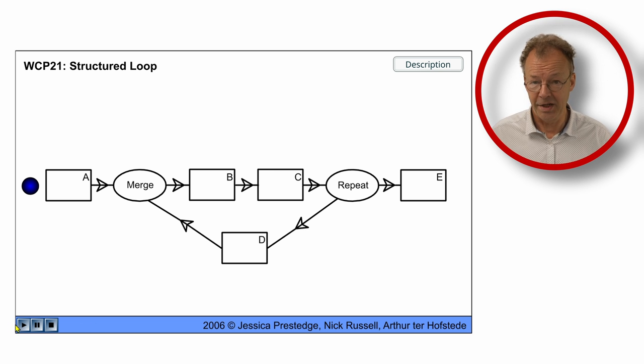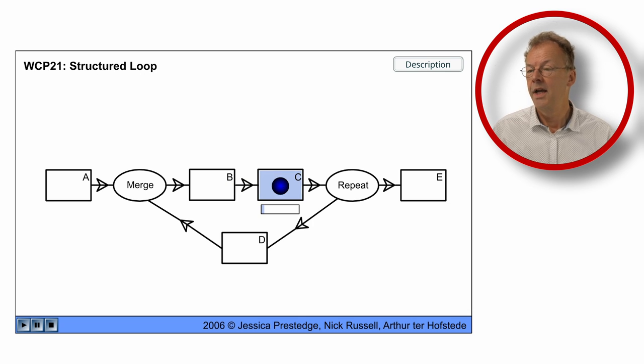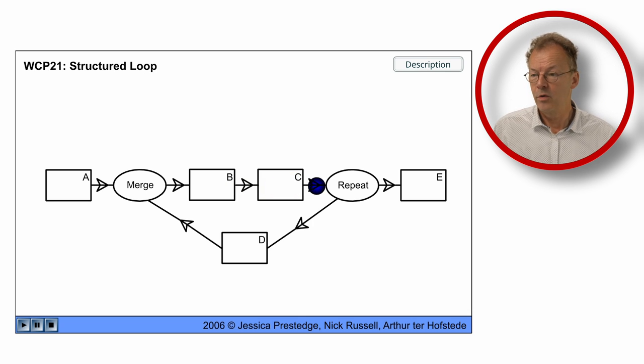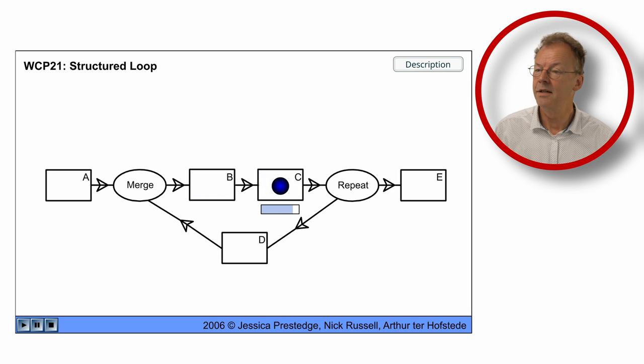Here we have three flash animations. The first one is for the general structured loop pattern. So here we have the structured loop and we go into the loop and we repeat this. So we say yes, repeat. We do D and then we go back to B, C and finally E.